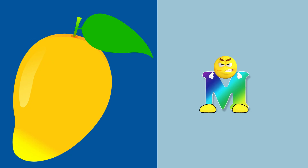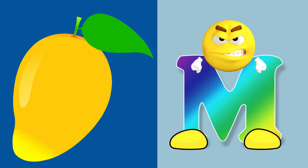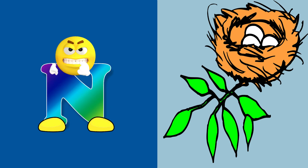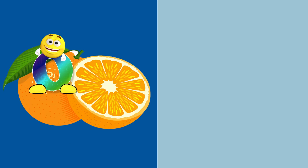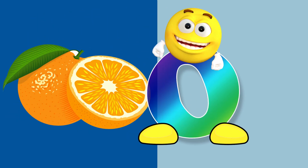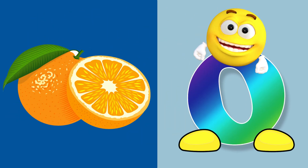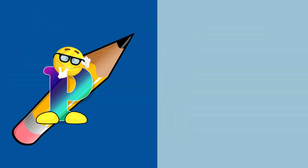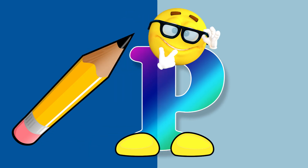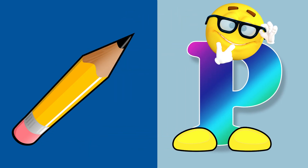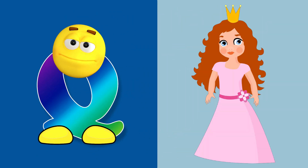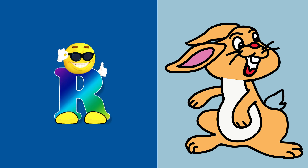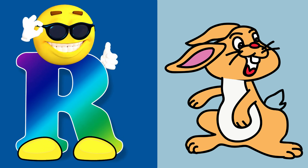M for mango. N for nest. O for orange. P for pencil. Q for queen. R for rabbit.